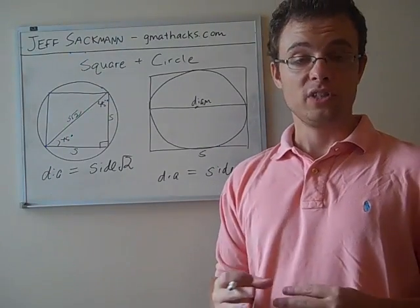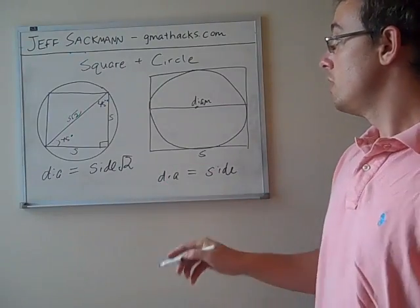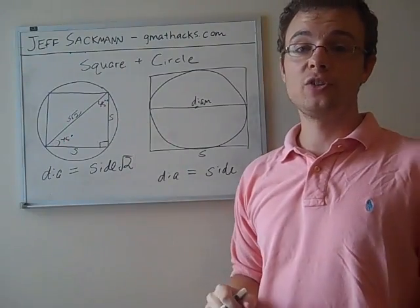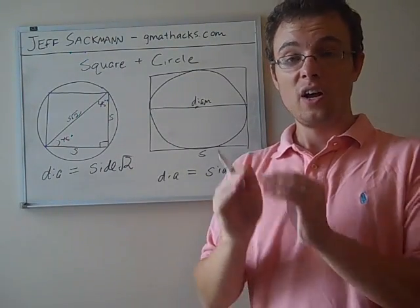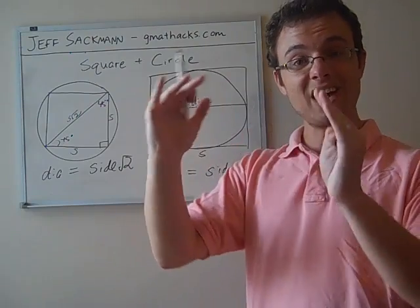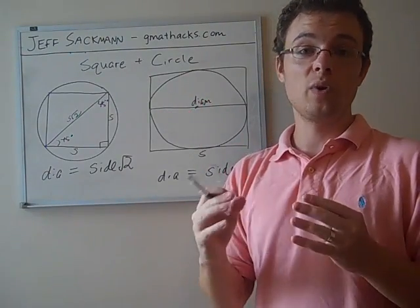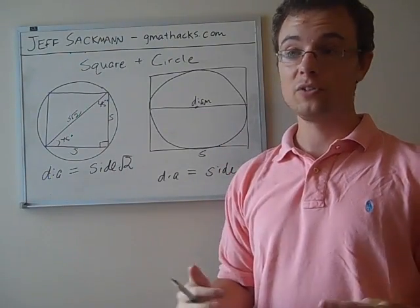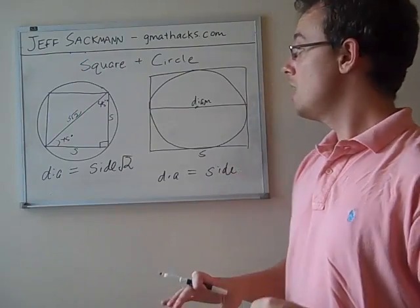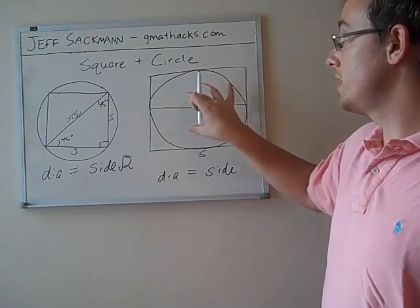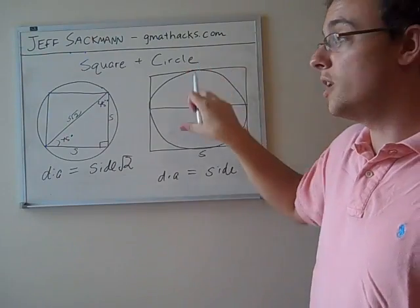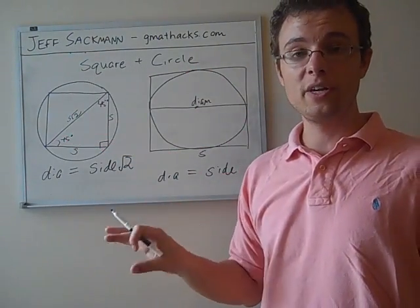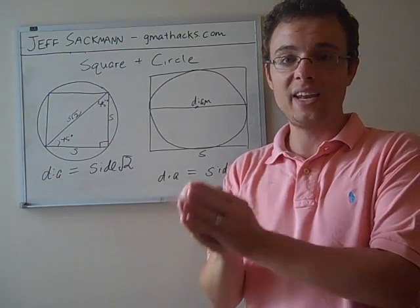One thing that the GMAT might throw at you, just to be prepared for it, is combining these two things. So here we have a circle inside a square. Here we have a circle outside a square. I've seen sample questions where a circle is inscribed in a square, which is itself inscribed in a circle, and you're asked, what's the ratio between the diameter of the inner circle to the diameter of the outer circle? It sounds pretty daunting. There are a lot of steps involved. But from here, you can figure out the relationship of this circle to the relationship of the square. From here, you can figure out the relationship of this square to the relationship of the bigger circle. And with the commonality of that inner square, you can relate all those things together.